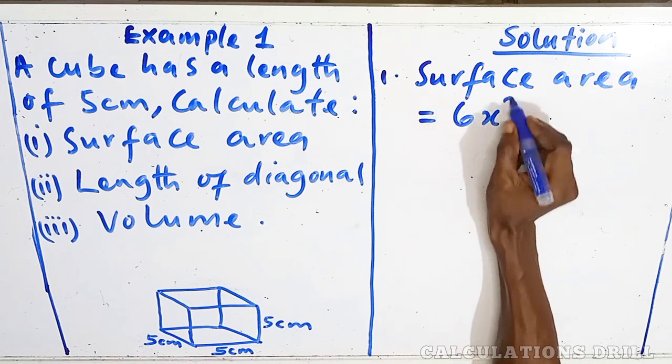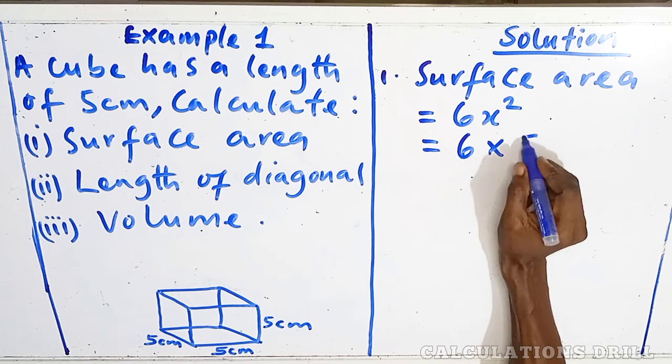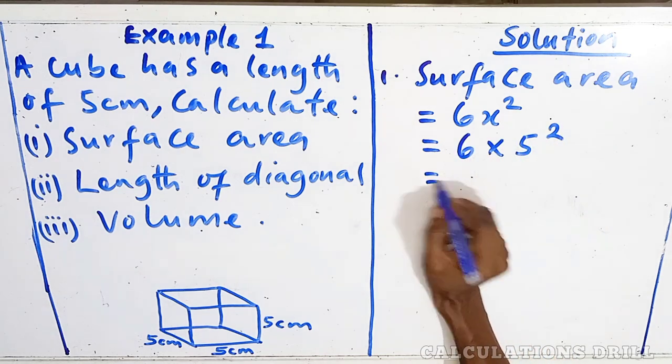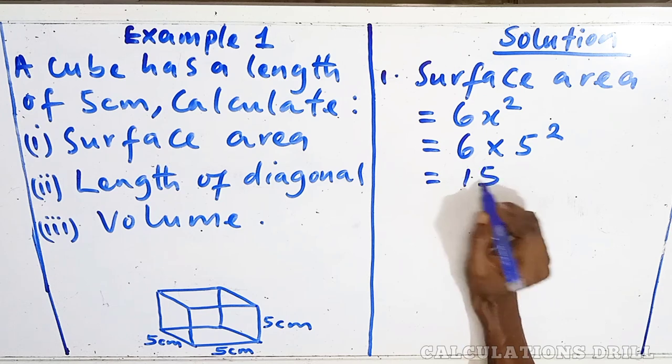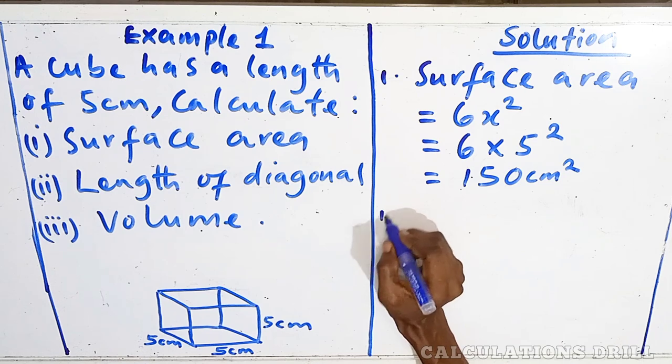And the formula is 6x². The x there is the length. So, that gives us 6 times 5². 6 times 25, and that will give us 150 cm².